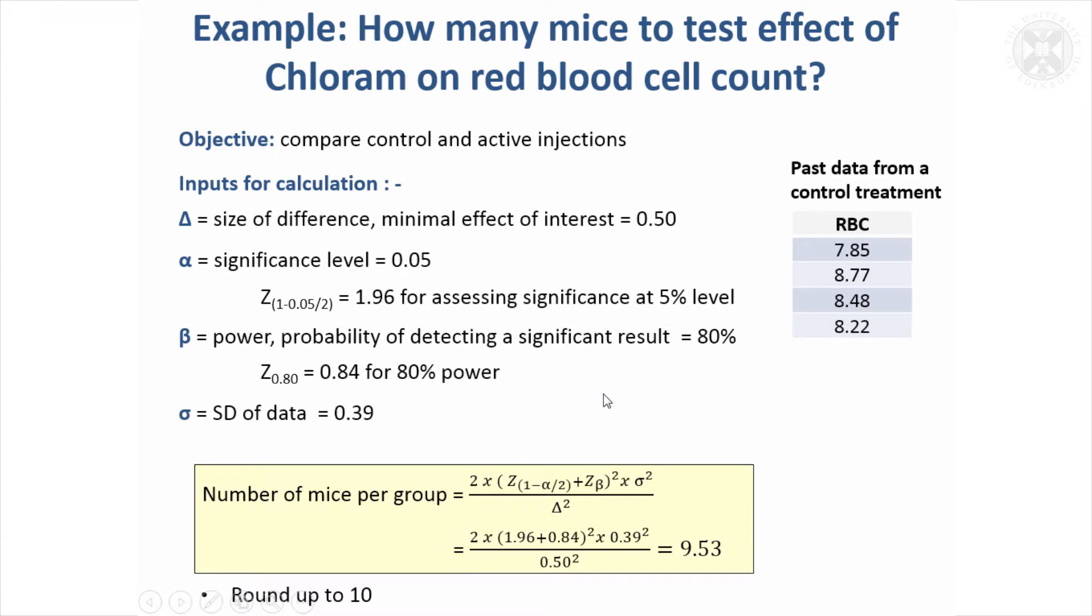If we put it into that standard formulae I showed, plug all those numbers in, it's quite a simple thing to do in Excel, and we come out with 9.53. So that gives the number of animals we need per group, and it's always good practice to round that up so that means we need 10 animals, 10 mice in each of those groups.